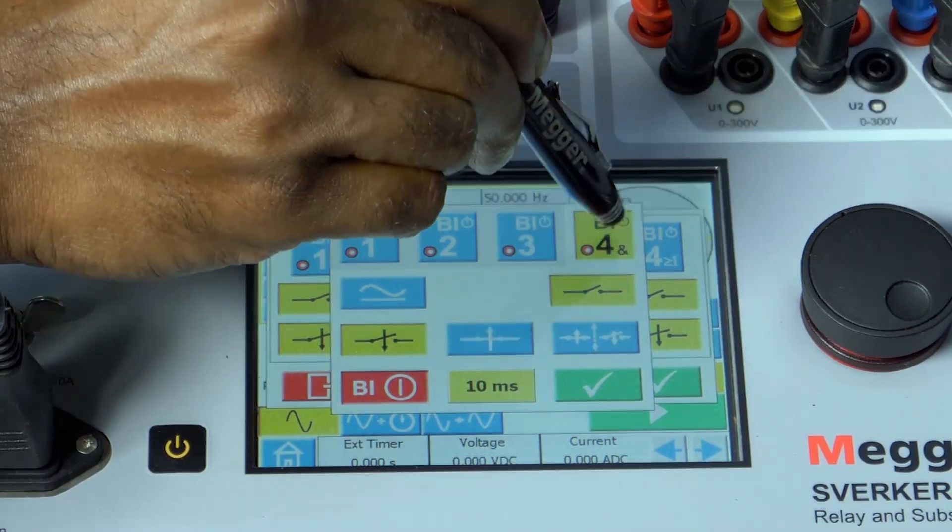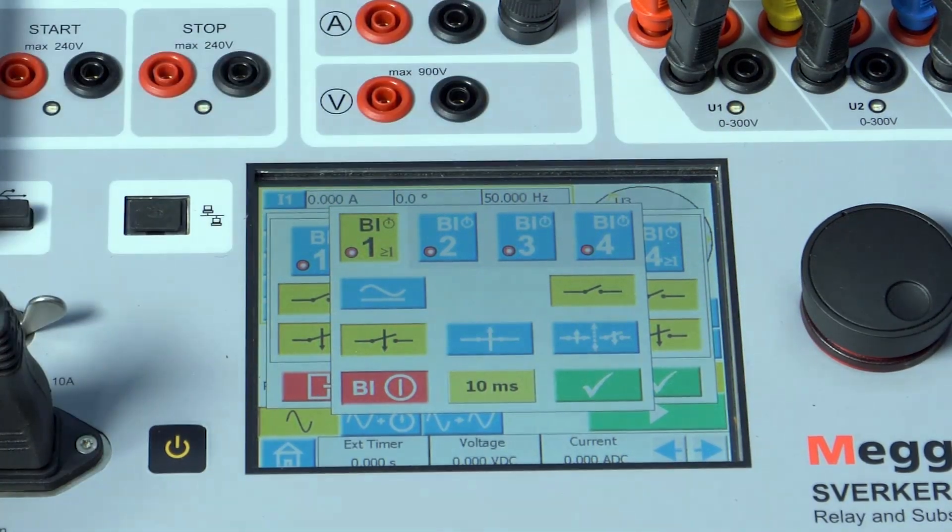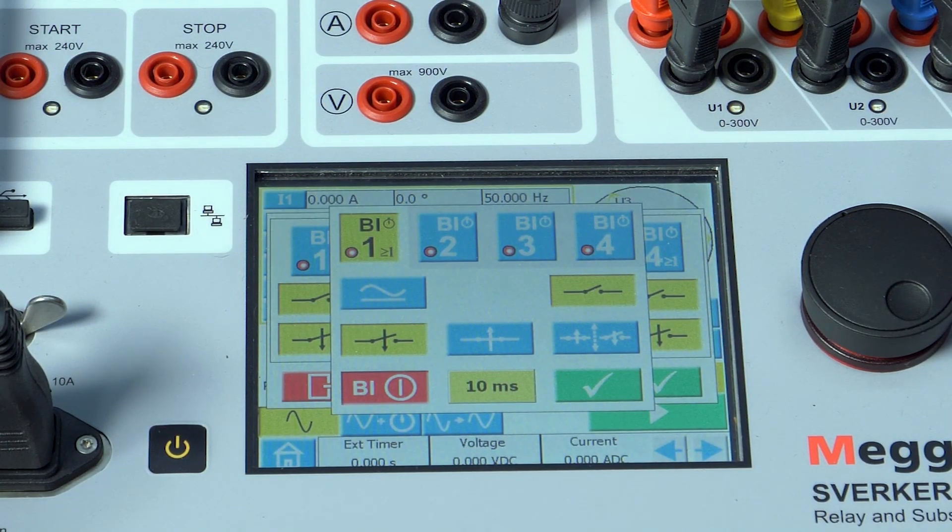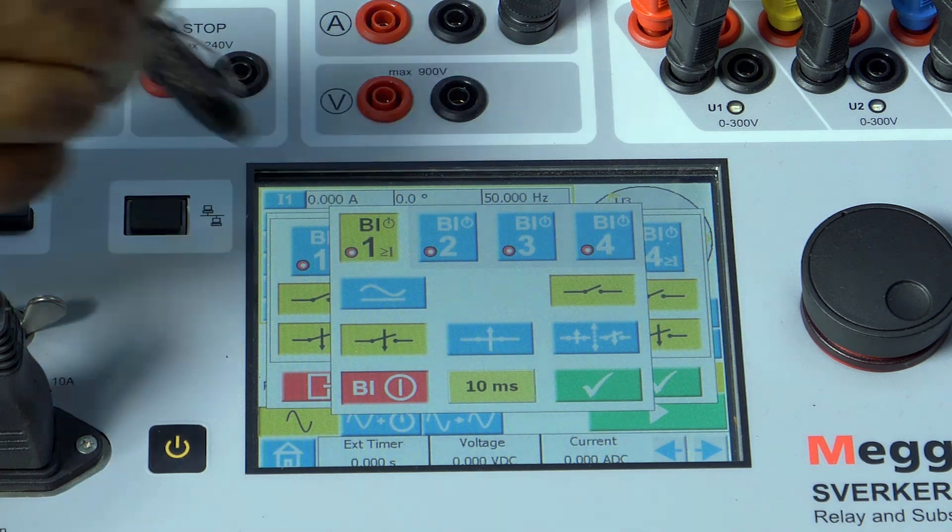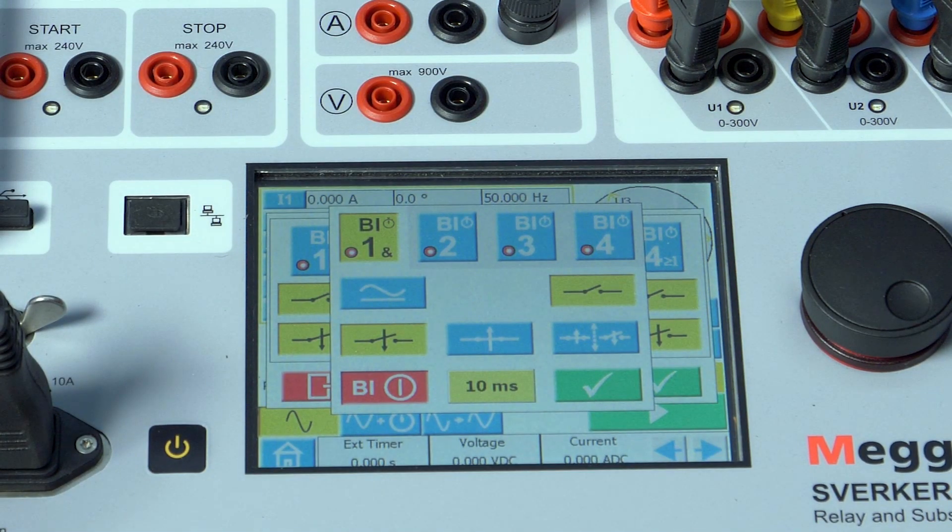The greater than or equal to 1 option means when the binary input which is chosen for this option becomes high, the kit stops the injection. Ampersand acts as an AND logic. That is, when ampersand is used for binary input 1 and binary input 2, then the kit will stop the injection only when both the binary inputs are high.